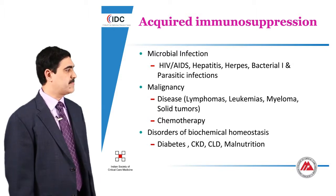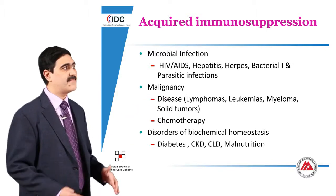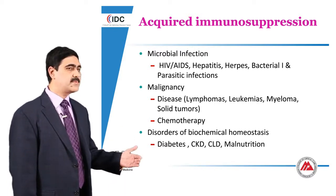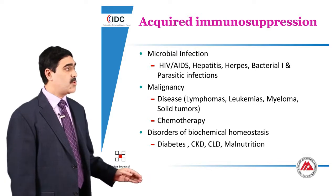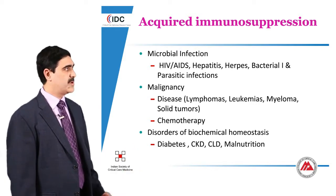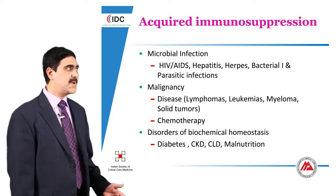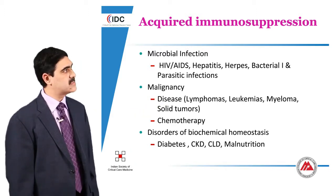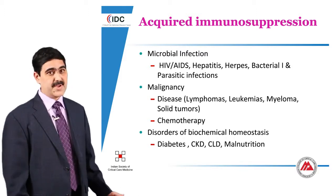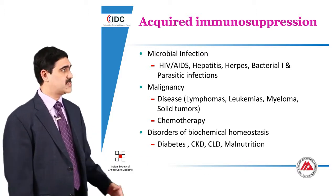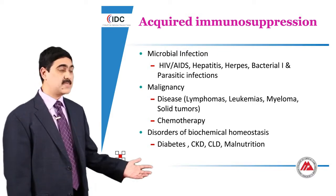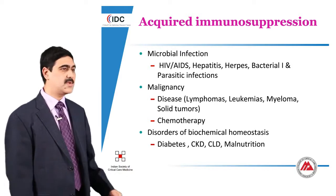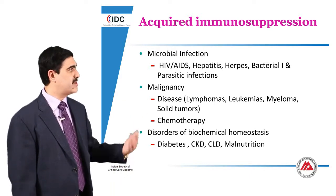Now, what are the various reasons why someone could develop acquired immunosuppression? The first thing we should remember is that there are several infections, particularly chronic ones, that could by themselves lead to an immunosuppressed state. Although we often think about the human immunodeficiency virus, HIV, or AIDS, we must remember that there are several other viral infections like hepatitis and herpes, some bacterial infections particularly chronic ones including tuberculosis, and parasitic infections that could lead to a state of immunosuppression predisposing patients to other infections.